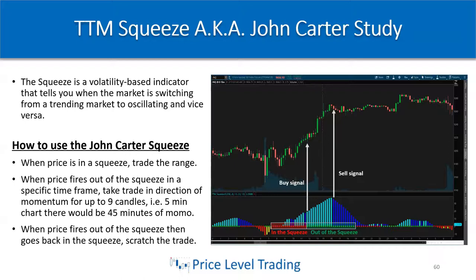When price fires out of the squeeze on a specific time frame, you'll see the red dots turn to green — that's when momentum is strong in the direction price is moving, until price goes back in the squeeze where the green dots turn to red. When you see price fire out of the squeeze, take the trade in the direction of the momentum for up to nine candles. On a five-minute chart, that would be 45 minutes of momentum. If price fires out then goes back in the squeeze, you should scratch the trade since it was likely a fake-out.